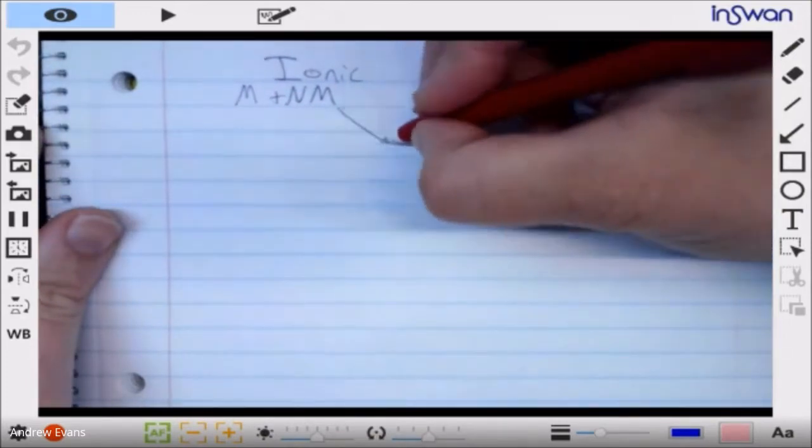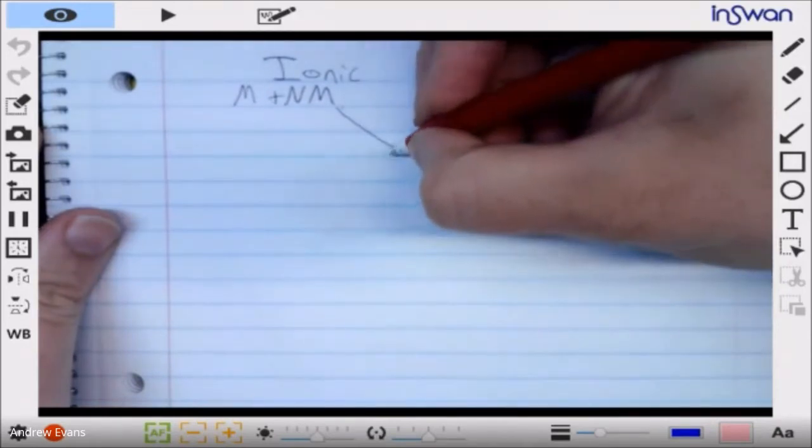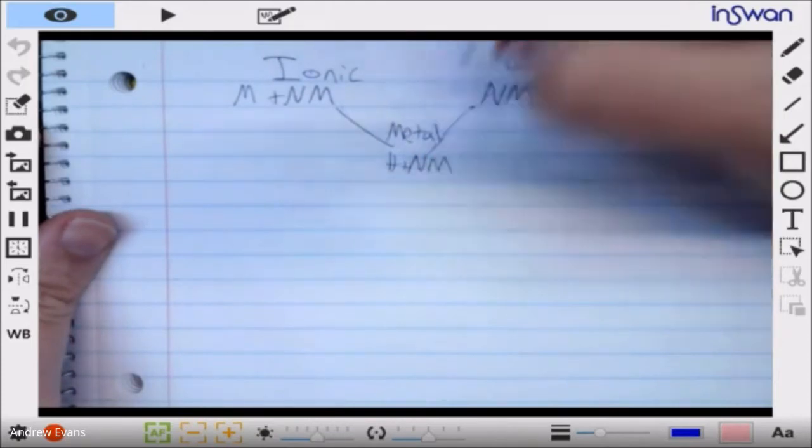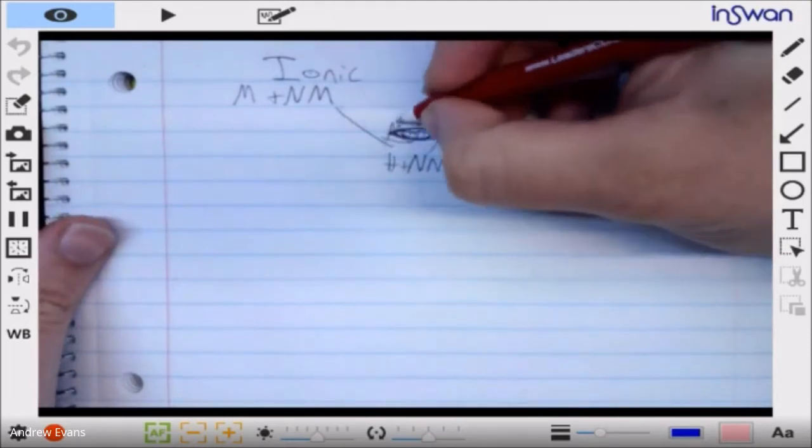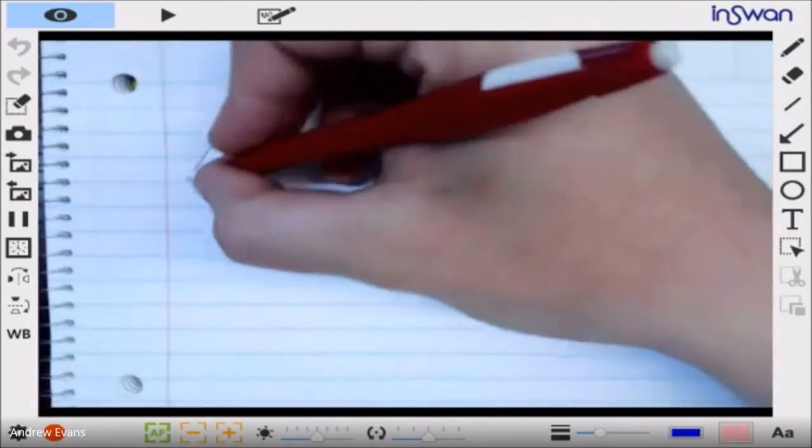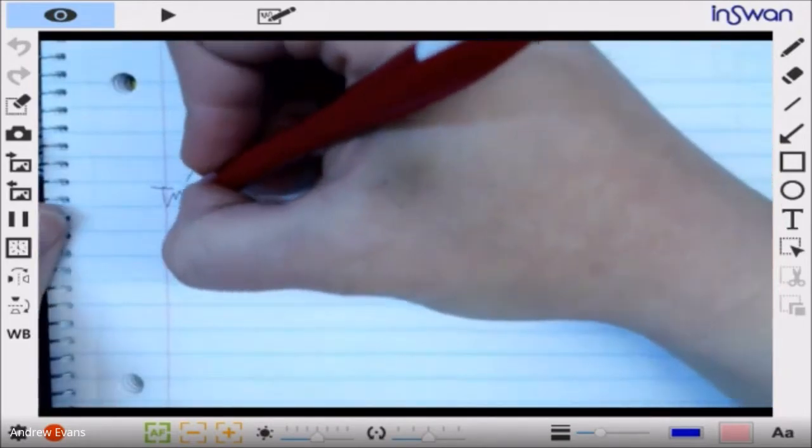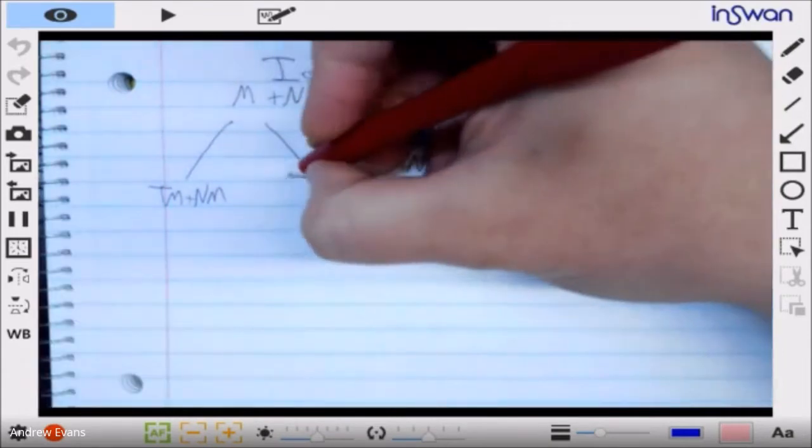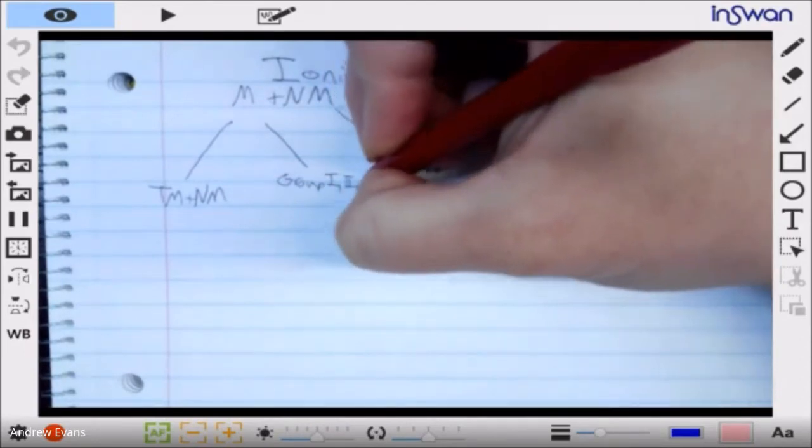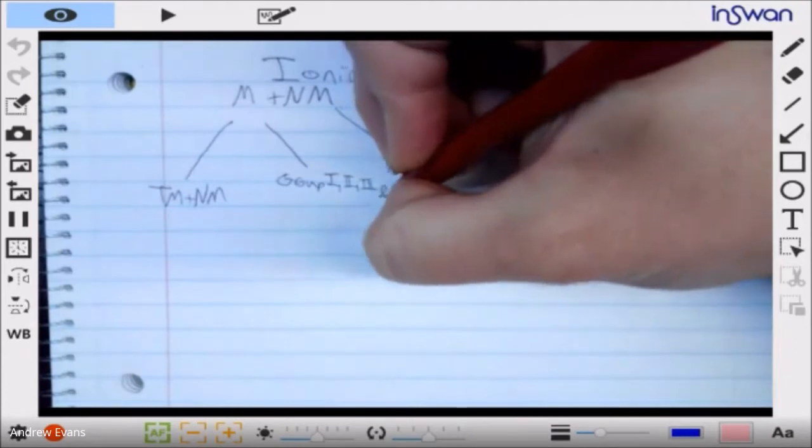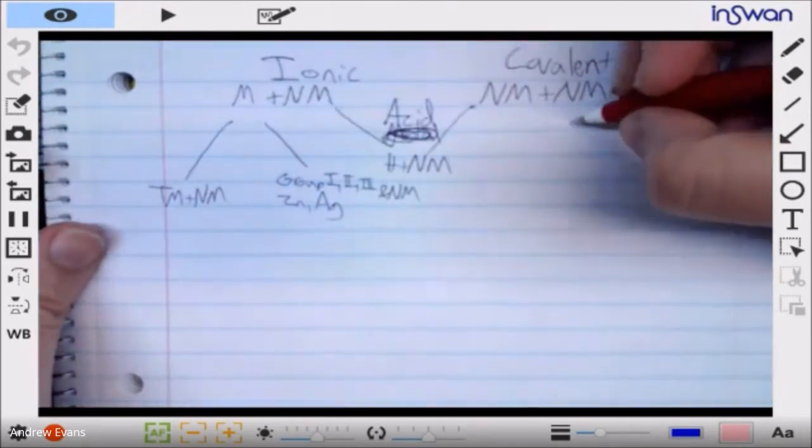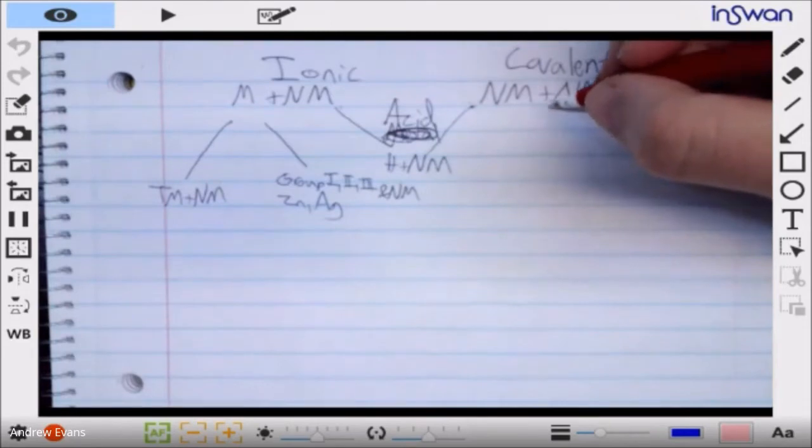From there we could break it down into various different classes. This one kind of fits somewhere between ionic and covalent - when we have hydrogen plus a non-metal we typically have an acid. The ionic we could break down into transition metal plus a non-metal, versus group one, two, or three and a non-metal, zinc and silver. With the non-metal we could really break it down into essentially this is usually binary.